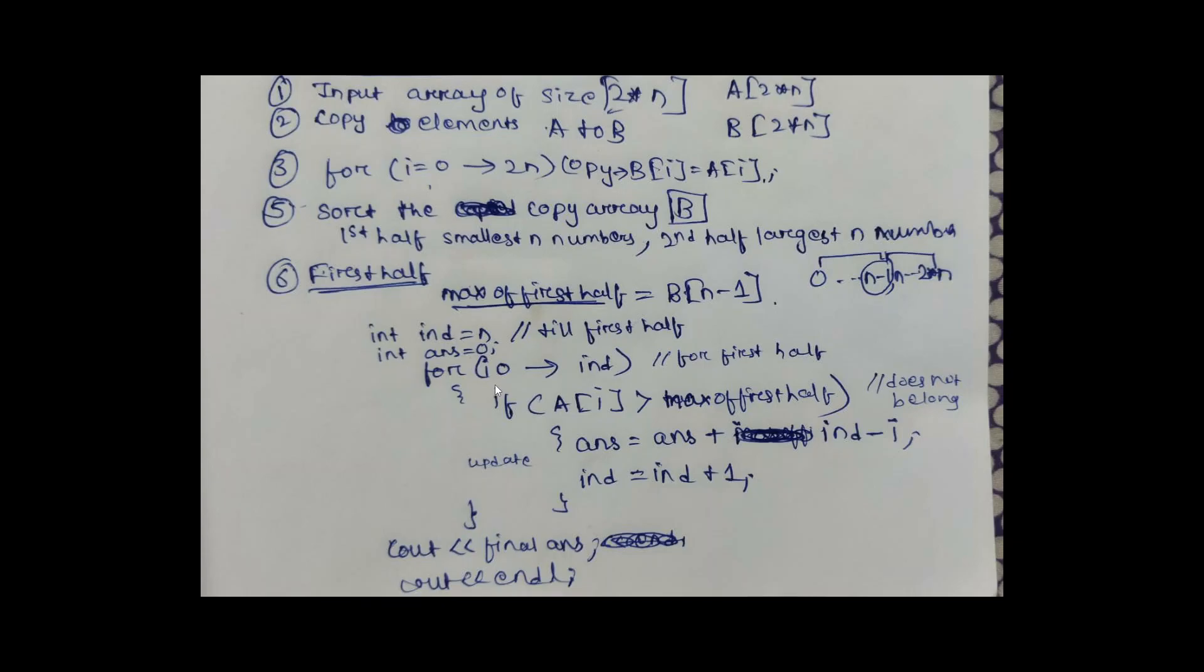For the first half, we traverse from i equals 0 to index N. If in the parent array any element does not belong to the first half, that is, it is greater than the max of the first half (which is at N minus 1), then we add it into our answer and update the index to index plus 1.